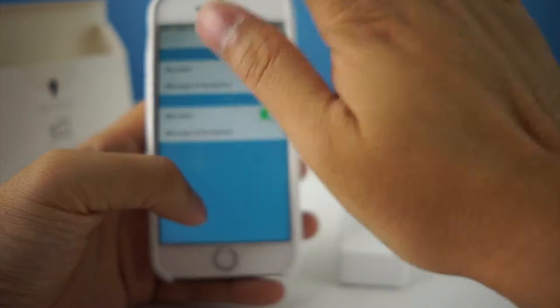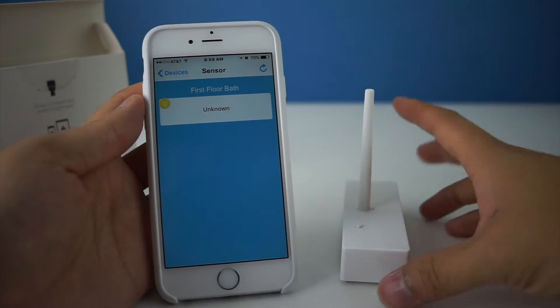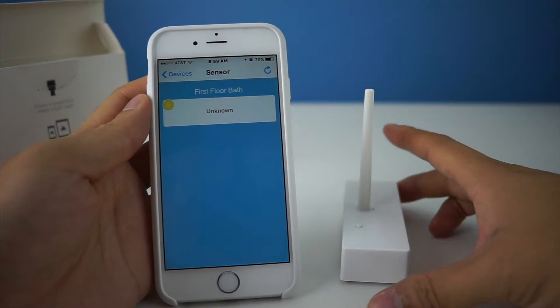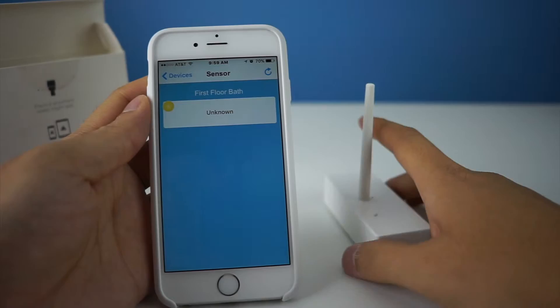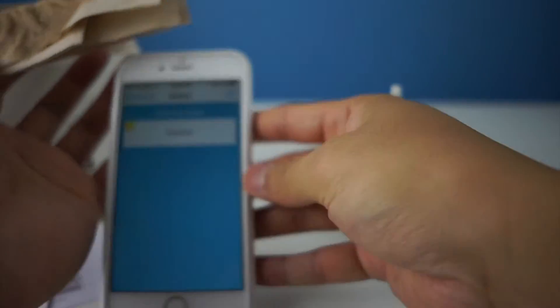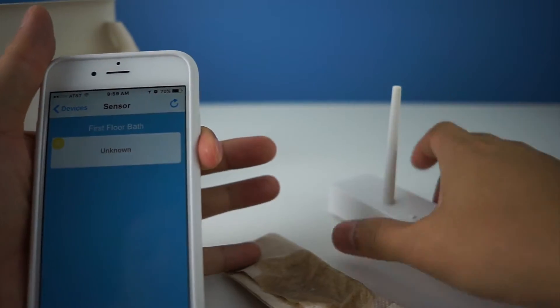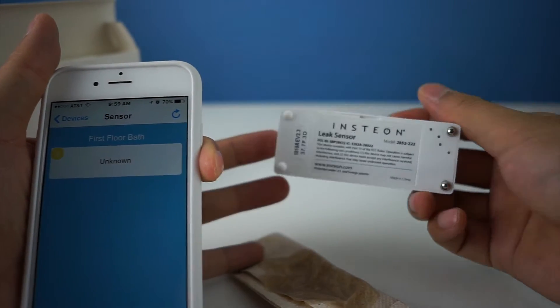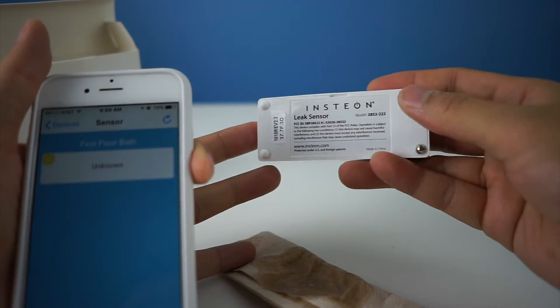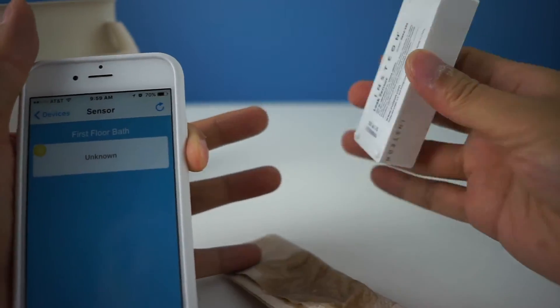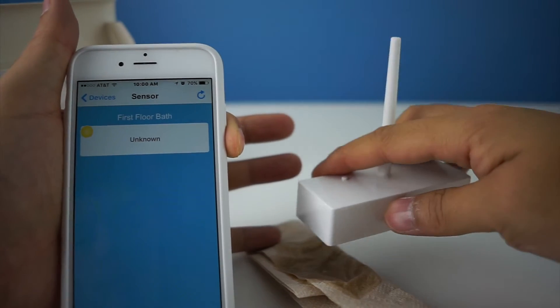So time to test it. Right now it shows unknown - that's just the way it is once you have the device. The way you're supposed to test it is you get a sponge. I don't have a sponge, I have some wet paper. There are two contacts in the back and all you do is contact it.